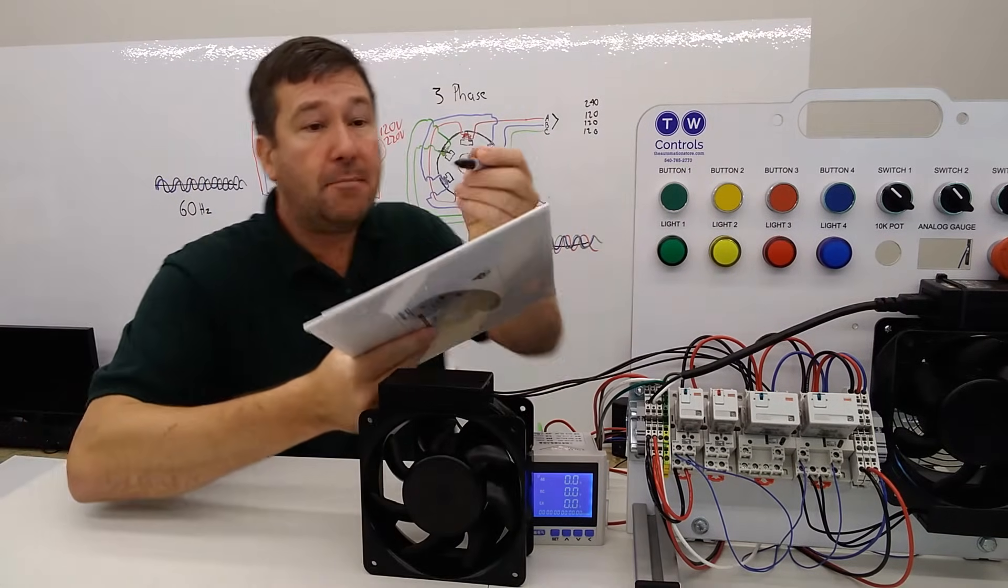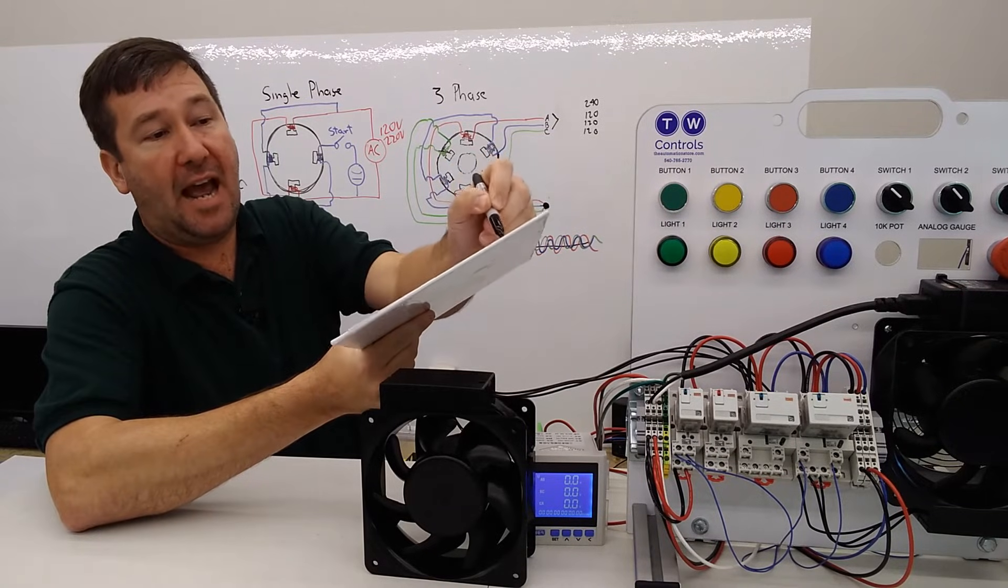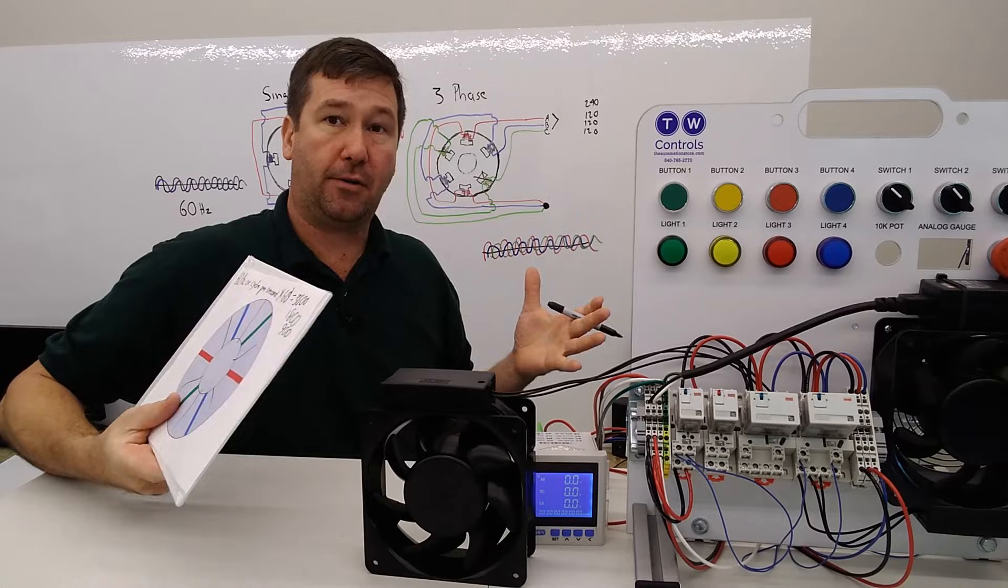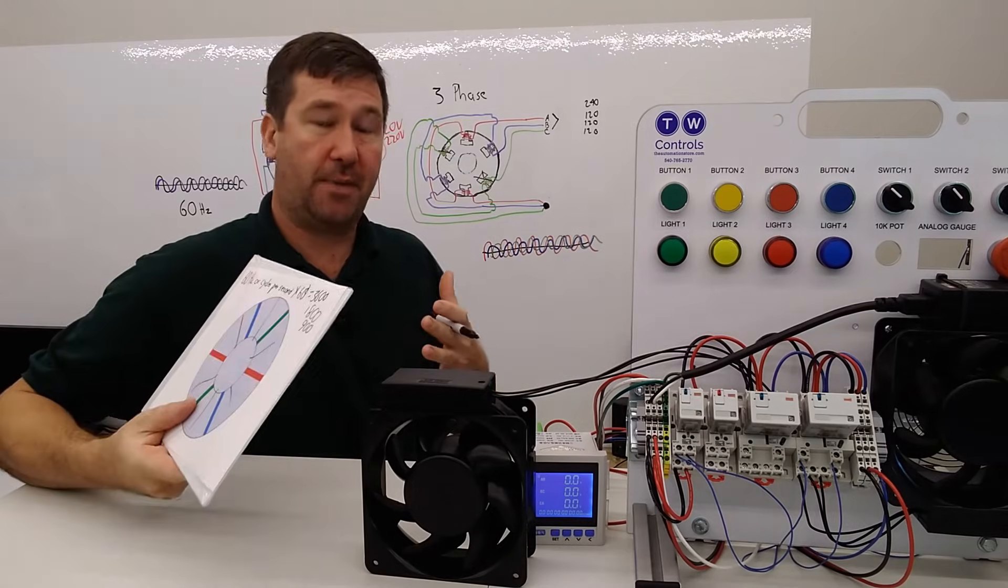And if you had, say, an eight-pole motor, it would be 900 RPM. Every time you go double your poles, you're going to split your RPM in half.